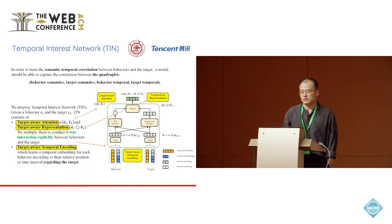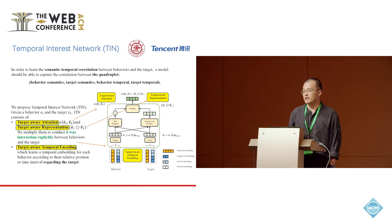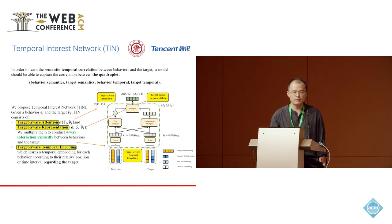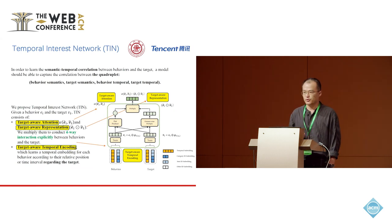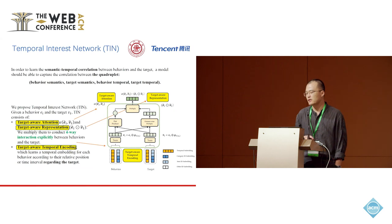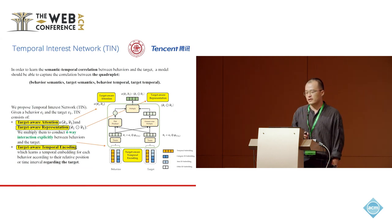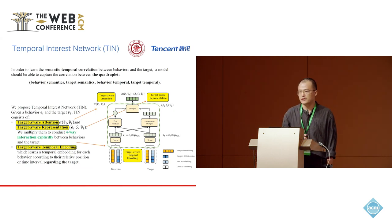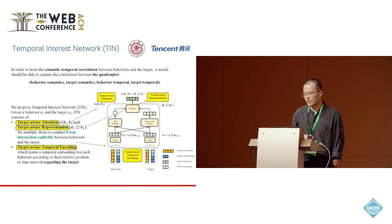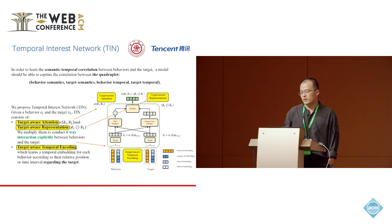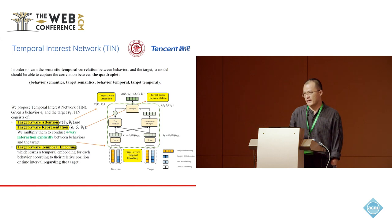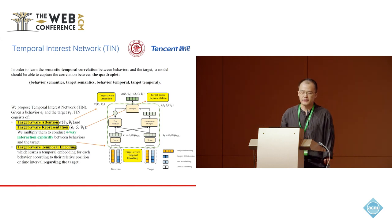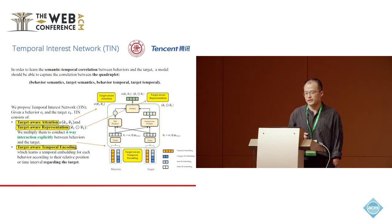In order to learn such semantic temporal correlation between behaviors and the target, a model should be able to capture the correlation between the following quadruplet: the behavior semantics, the target semantics, the behavior temporal, and the target temporal. In this paper, we propose the Temporal Interest Network, or TRN for short, which consists of three key components.